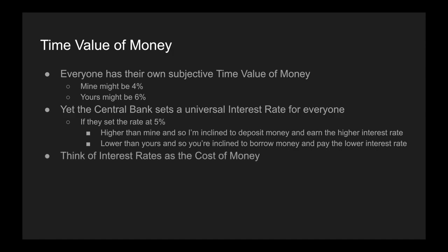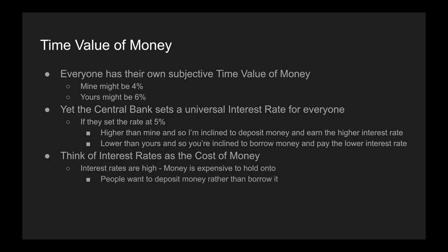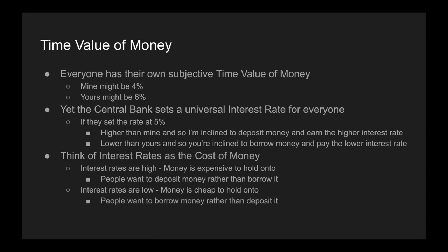One way of thinking about the time value of money is almost as the cost of money. If interest rates are high, money is now expensive to hold on to, which means people will want to deposit it in a bank account to earn the high interest rate rather than borrowing it. When interest rates are low, you can think of money as being cheap to hold — people will want to borrow money rather than deposit it, because it's so cheap to gain access to it.